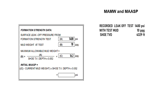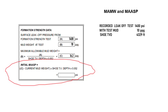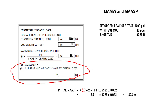Using 16.2 as the maximum allowable mud weight, we then calculate the MAASP: 16.2 minus current mud weight 10.3 equals 5.9, multiplied by shoe TVD and then by 0.052. We get MAASP equal to 1328 psi.